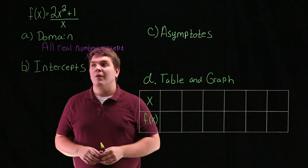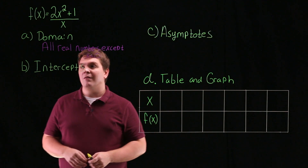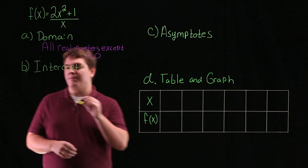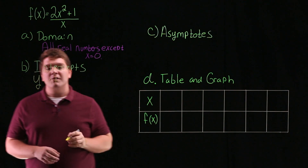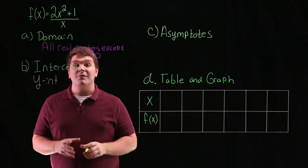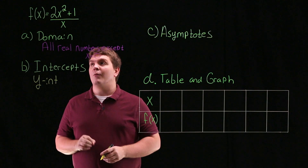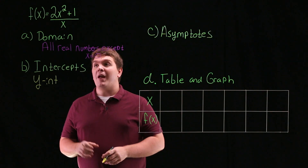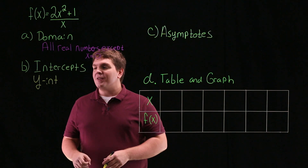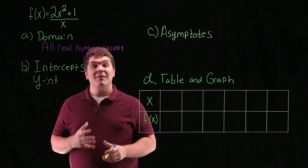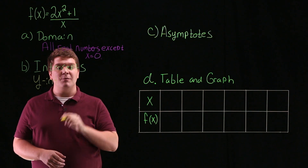For part b of this problem, we're asked to find any of the intercepts. Let's begin by talking about the y-intercept. Remember, the y-intercept comes from when x equals 0. From when we talked about the domain, we said the domain was all real numbers except for x equaling 0. So what this tells us is that we don't have a y-intercept, because we can't have x equals 0.